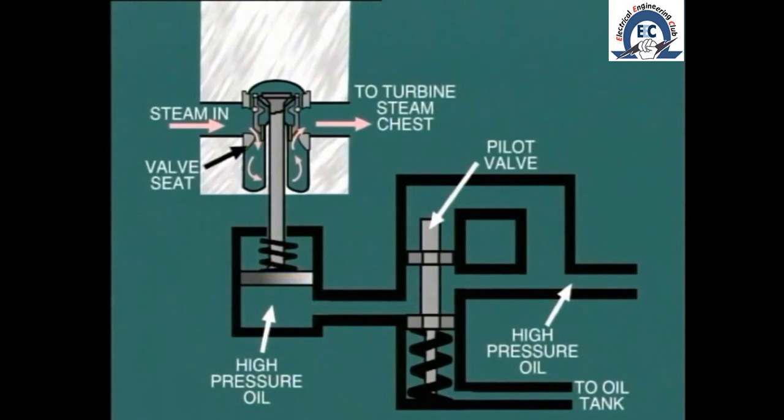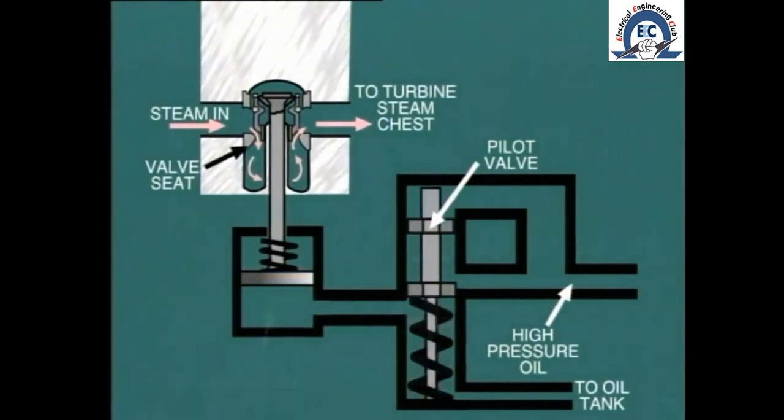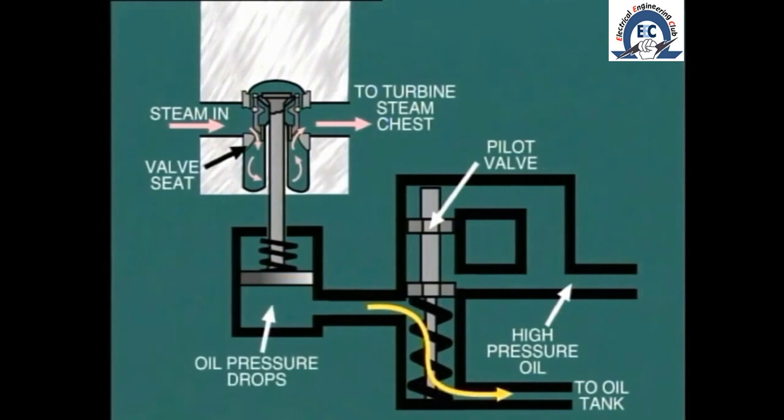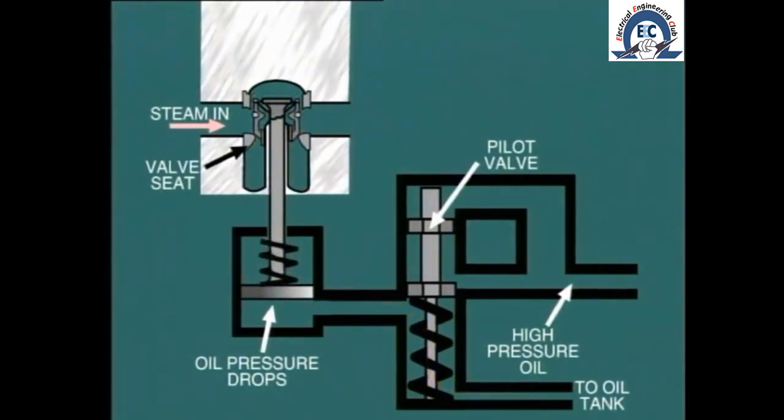In order to close the stop valve, the pilot valve must be moved to the trip position, thereby allowing the high-pressure oil to drain back to the oil tank. As a result of the sudden decrease in oil pressure below the piston, the compression spring slams the valve closed.